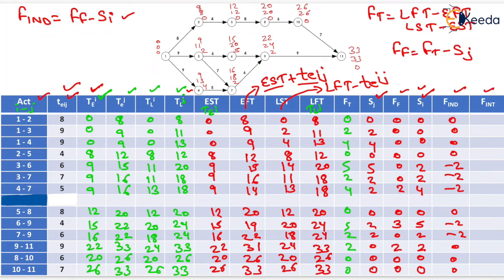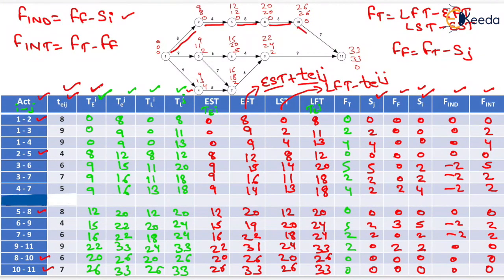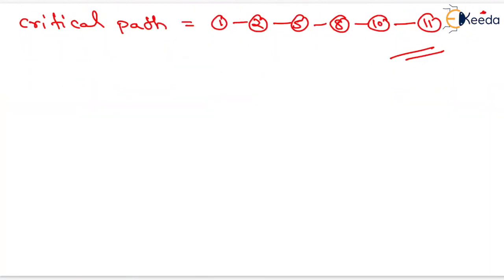For interfering float, we subtract free float from total float. The interfering float values are: 0, 2, 4, 0, 5, 2, 2, 0, 0, 0. Activities with total float equal to 0 are the critical activities: 1-2, 2-5, 5-8, 8-10, and 10-11. Therefore, the critical path is 1 → 2 → 5 → 8 → 10 → 11. Thank you very much, students.